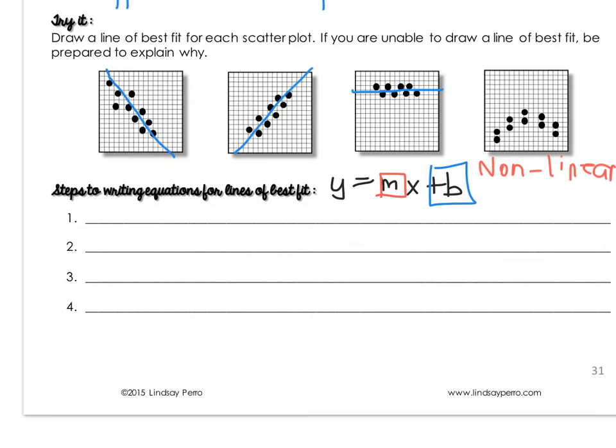So to do the line of best fit, it's just like if you were trying to find the equation of a line from two points. So you're first going to identify two points on the line. Hopefully you drew a really good line of best fit. So those two points are going to summarize most of the data.